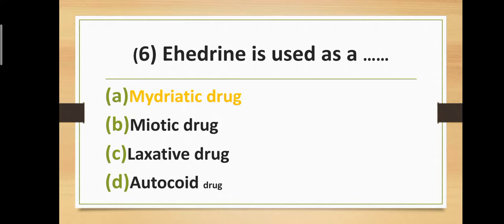Question six: Ephedrine is used as — Option A: Mydriatic drug. Option B: Miotic drug. Option C: Laxative drug. Option D: Antacid drug. Correct answer is Option A — Mydriatic drug. Ephedrine is used as a mydriatic drug.